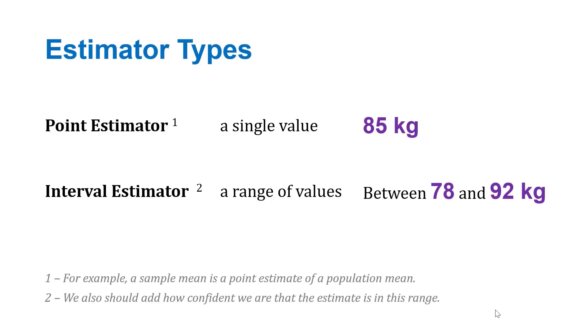We also want to talk about the different estimator types. We have point estimators and interval estimators. Point estimators are a single value, like 85 kilograms. As an example, a sample mean is a point estimate of a population mean.